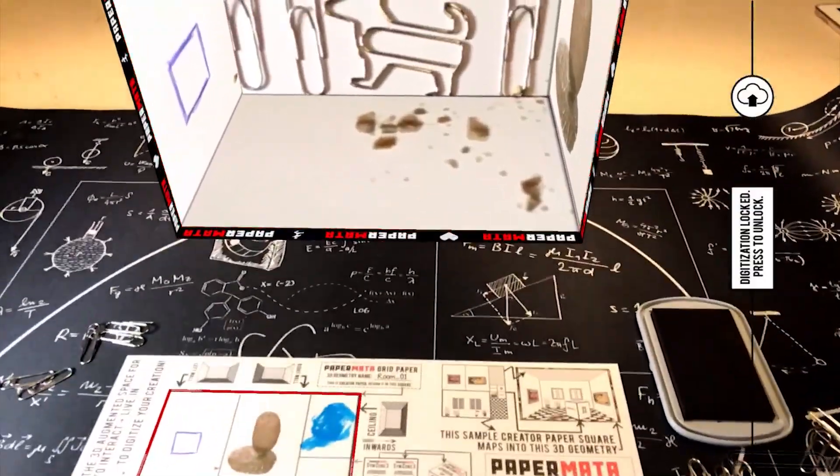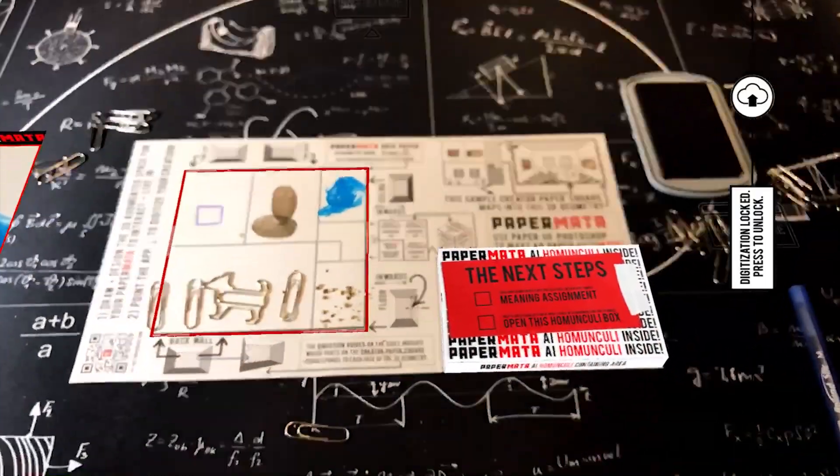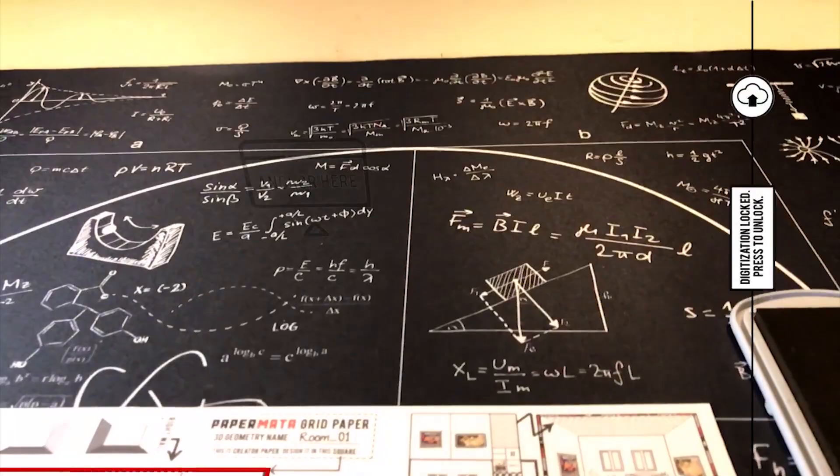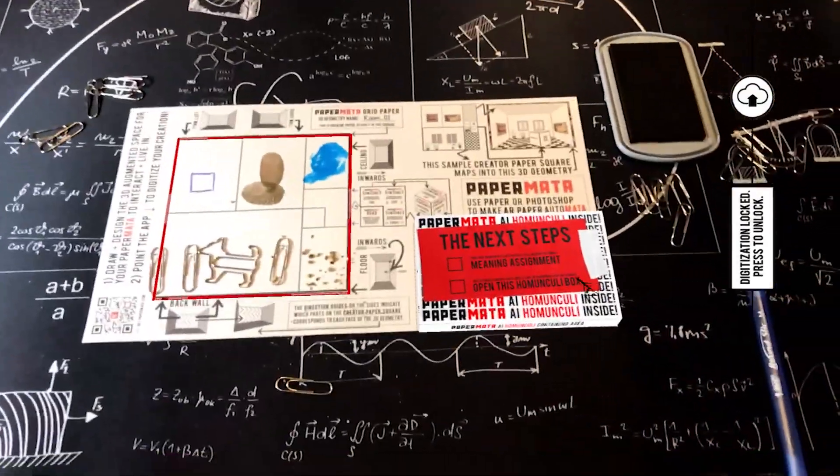As you design your Papermata, you can see a 3D preview of it mapped onto the corresponding 3D geometry. Press the digitize button in the center to lock it. You can dock the 3D preview to different anchors for easier viewing.